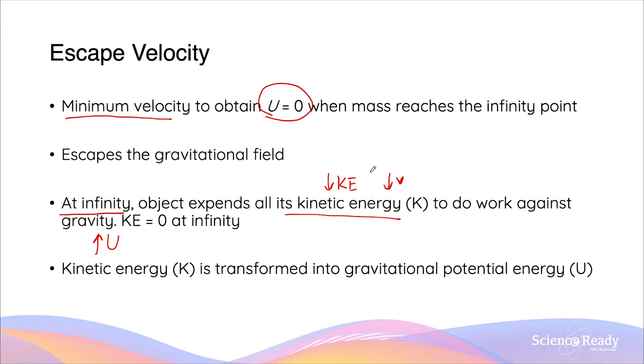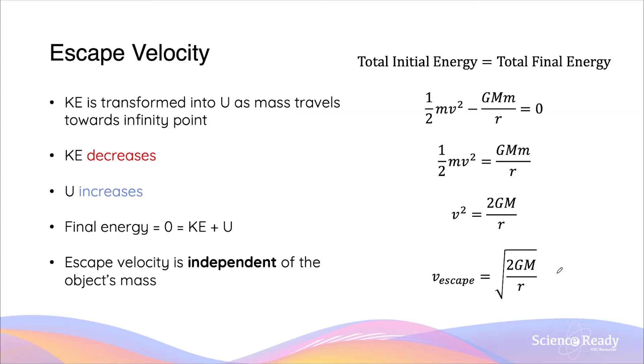If we launch a mass at its escape velocity, it will also get to the infinity point where its kinetic energy is zero as well. During this process where it goes from the point in the gravitational field to the point in infinity, its kinetic energy will be completely transformed into its gravitational potential energy. We can use this concept where the KE is being transformed into U to actually derive an expression for the escape velocity.